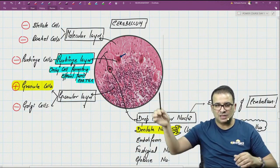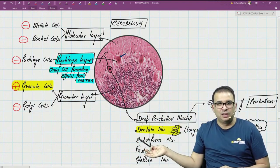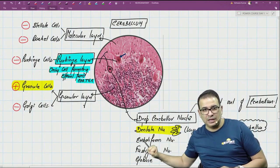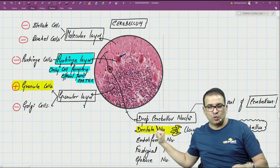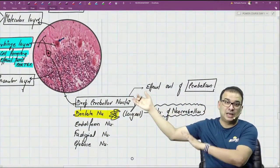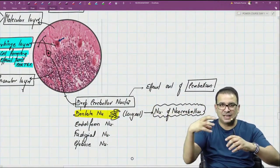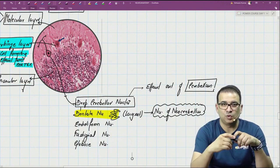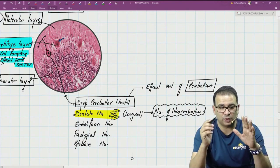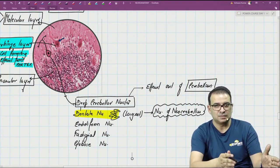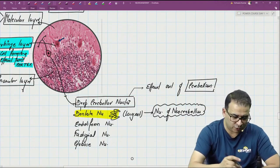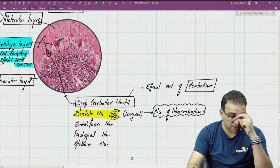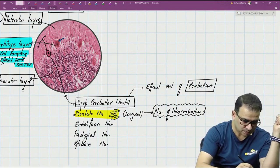However, the Purkinje cell is not going out of the cerebellum — it is going from the gray matter to the white matter only, because in the white matter we have the deep cerebellar nuclei. From the deep cerebellar nuclei, the efferent then goes out of the cerebellum through the peduncles. So: efferent from the cortex comes from Purkinje cells; efferent from the cerebellum as such comes from the deep cerebellar nuclei.